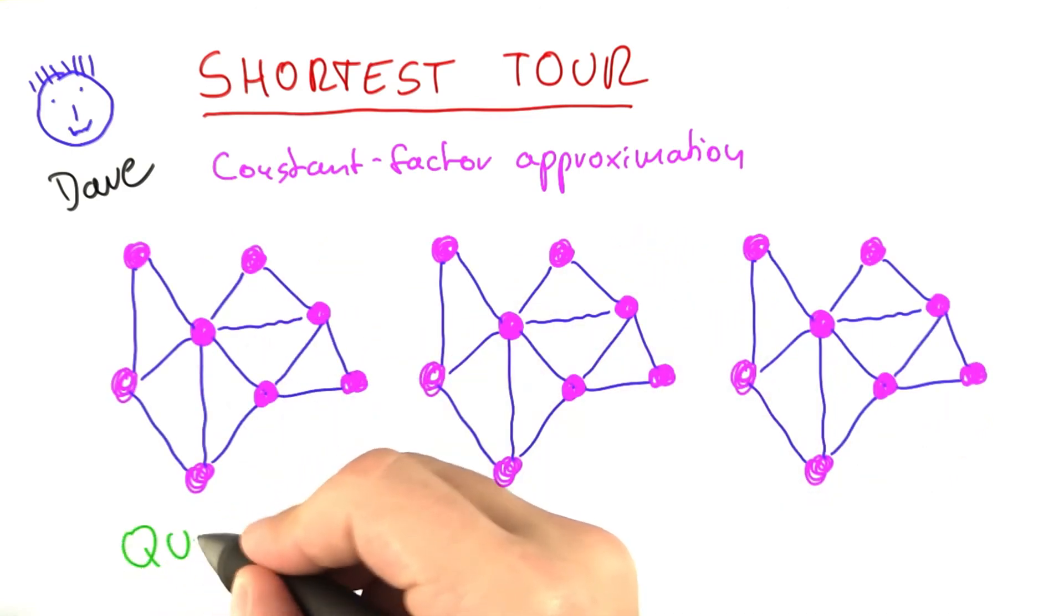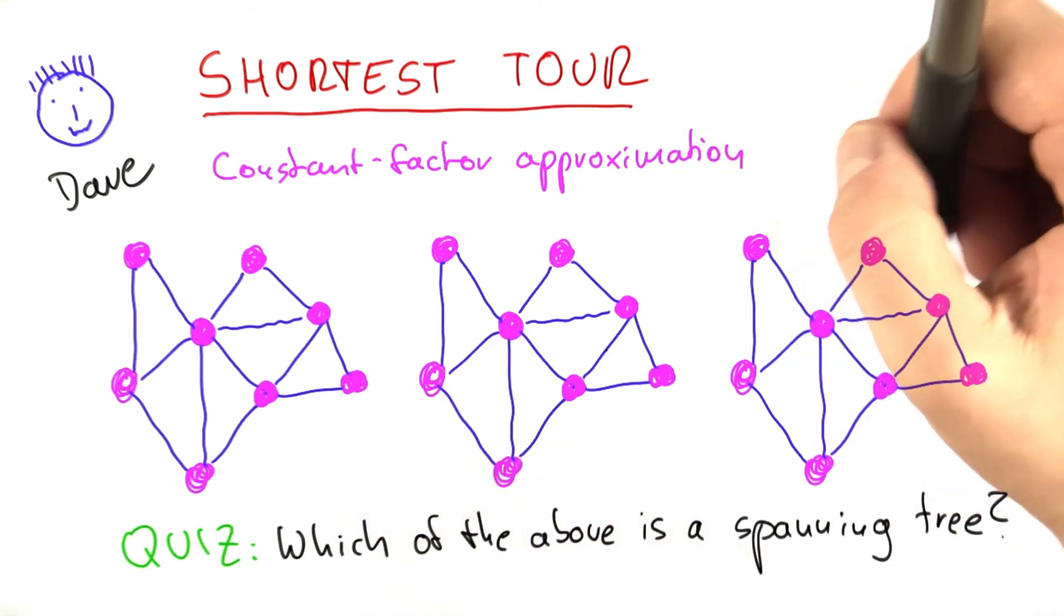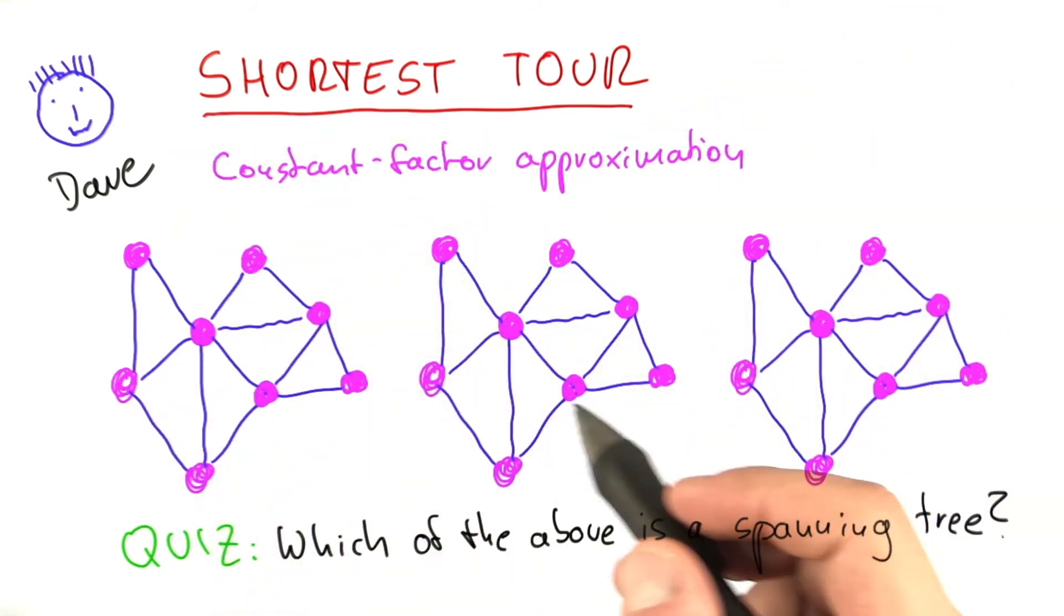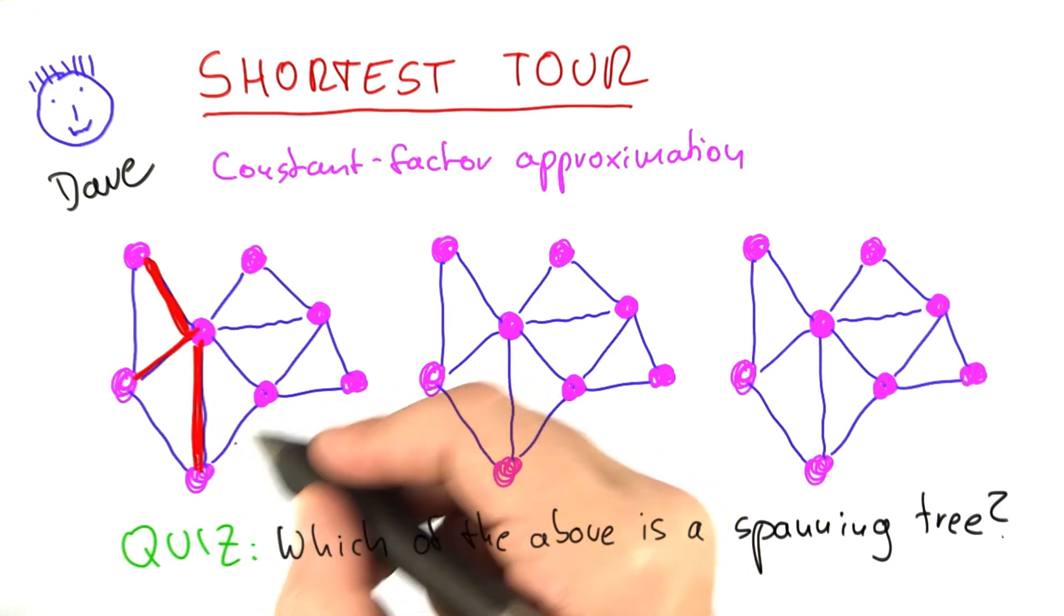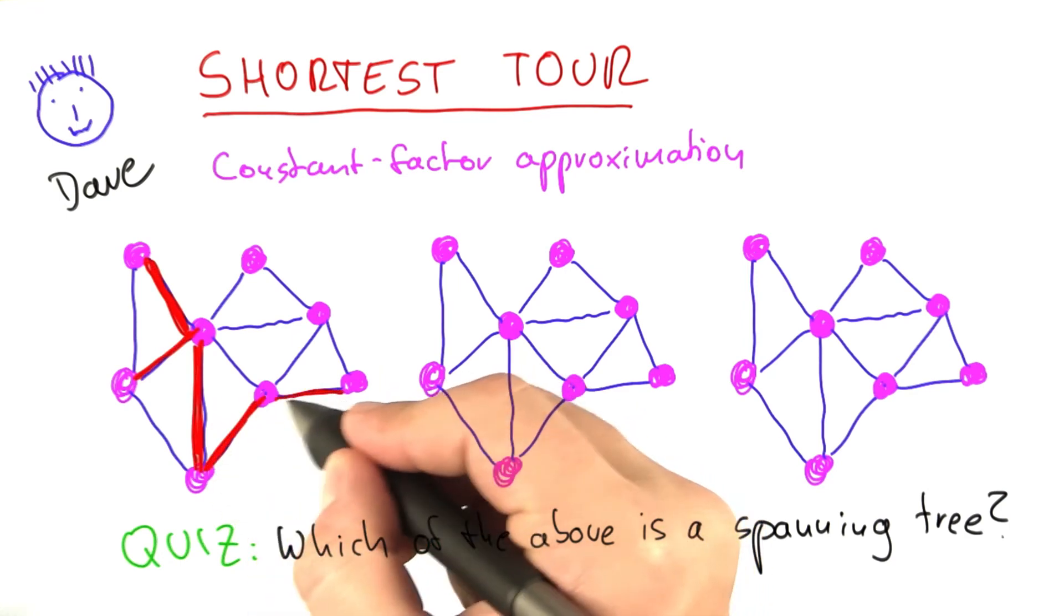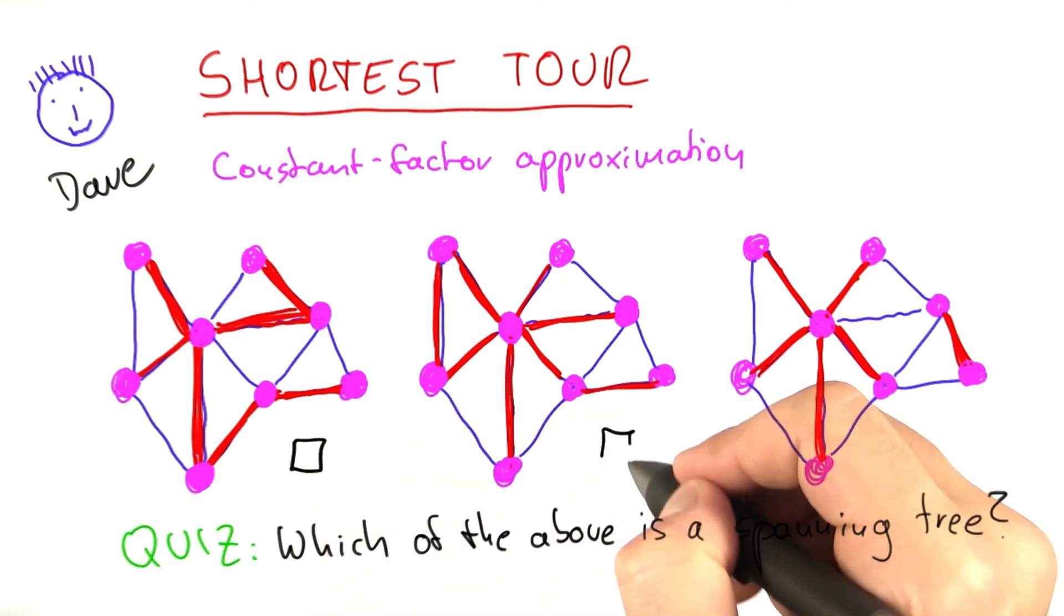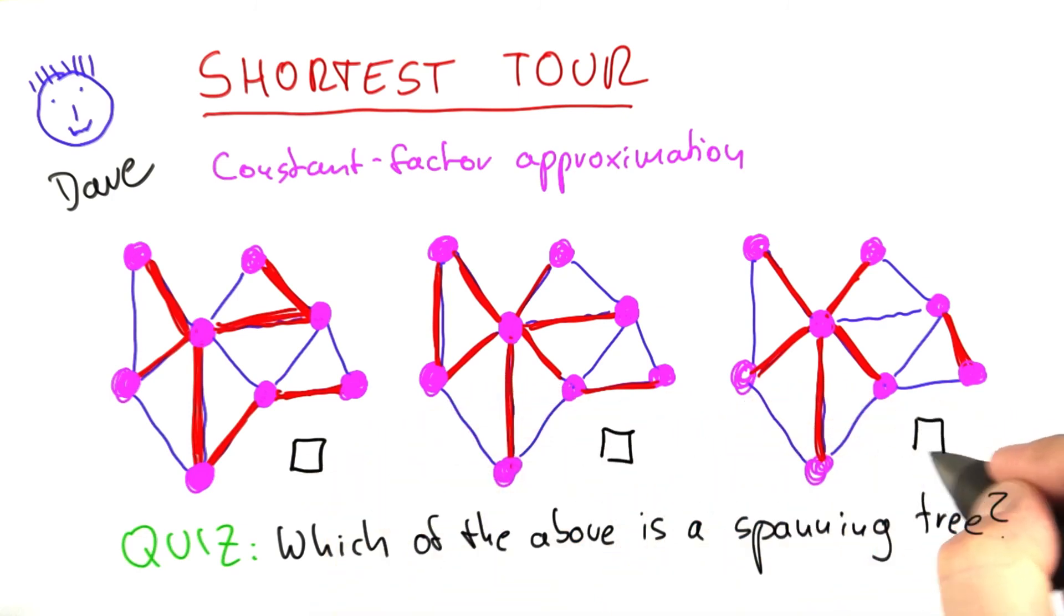So to have you figure this out, let's do a quick quiz here. This is the same network three times. And I'm going to give you three choices of what a spanning tree could be. And the red edges are always those that I'm selecting here. I would like you to tell me in which of these cases the red edges form a spanning tree for the graph.